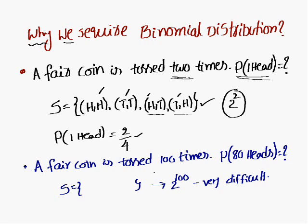If you consider this same model — a fair coin is tossed 100 times, what is the probability of getting 80 heads? The sample space consists of two-power-100 elements, so it is a very difficult task to find out the sample space. Therefore, we require the binomial distribution. How you can use the binomial distribution for this type of problems, we will discuss in the next slides.